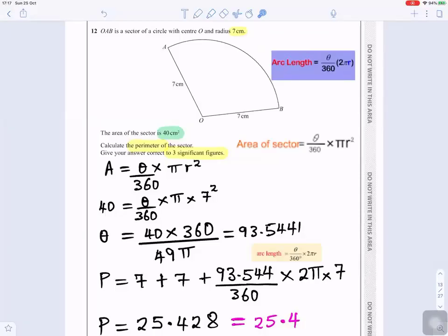Question number 12. OAB is a sector of a circle with center O and radius 7 centimeters.